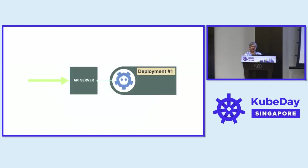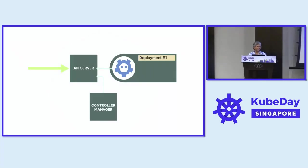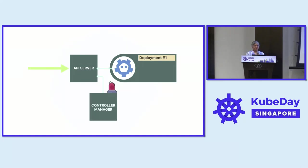Everything in Kubernetes is stateless except for etcd. The API server gets the request and passes it to etcd, where we now have the request for a deployment. Another core component is listening — the controller manager. The controller manager subscribes to all changes happening in etcd. In this context, two things are important within the controller manager: the deployment controller and the replication controller.